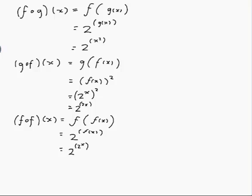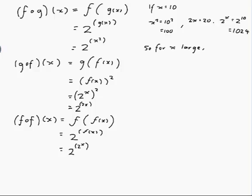Now we have to compare them for x large. So if x is equal to 10, then x squared is 10 squared, which is 100. And 2x is 20. And 2 to the x is 2 to the 10, which is 1024.